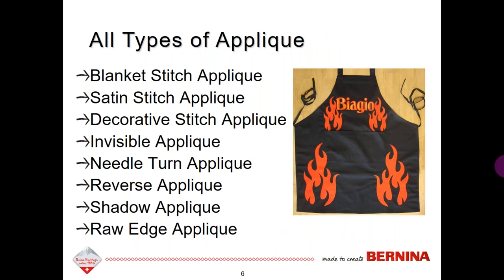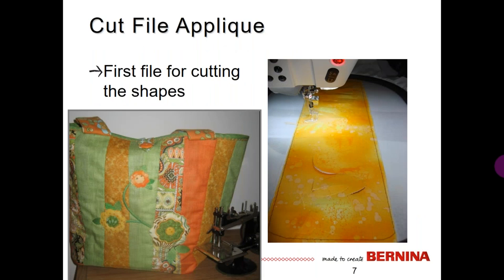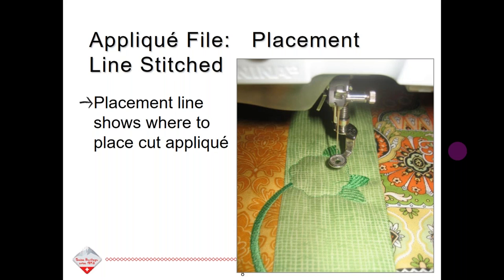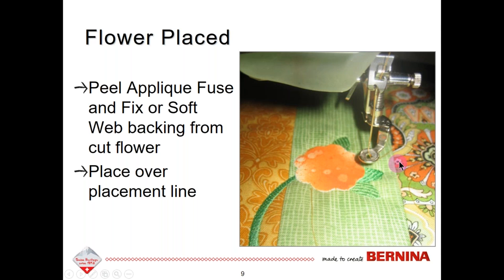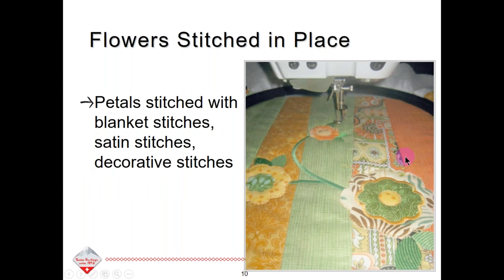Cutwork will do all sorts of different kinds of applique. With most types of Cutwork, you need two files. The first file is used for cutting the shapes — the Cutwork tool goes around and cuts out the shapes. The fabric has been backed by double-sided sticky so you can peel the paper away and add it to the background fabric. The second file is a stitch file with a placement line that shows you where to place the cutout piece, and then you finish the stitching with a cover stitch.